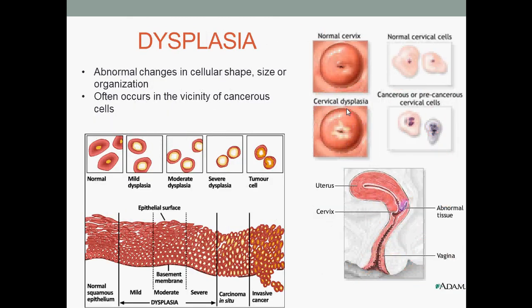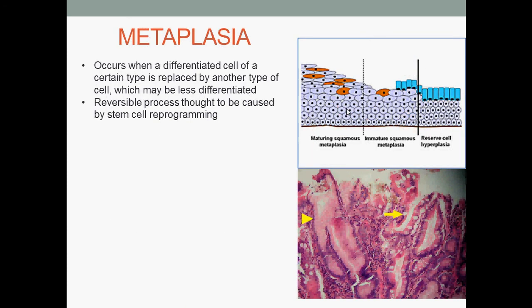Next, dysplasia. Dysplasia usually occurs in the vicinity of cancerous cells. It is defined as the abnormal changes in cellular shape, size, or organization. Next, metaplasia. Metaplasia occurs when a differentiated cell of a certain type is replaced by another type of cell, which may be less differentiated. It is a reversible process thought to be caused by stem cell reprogramming.